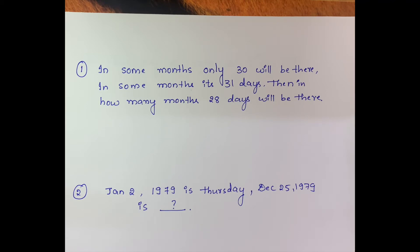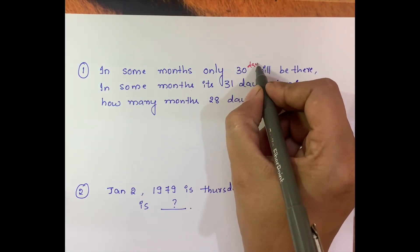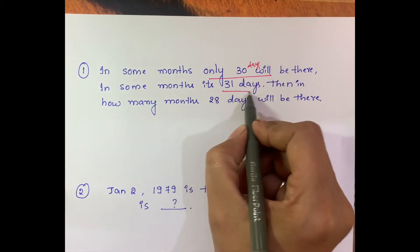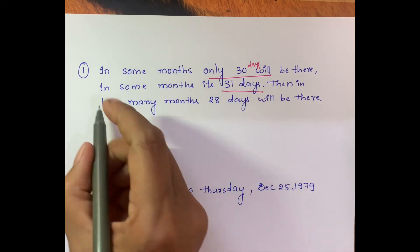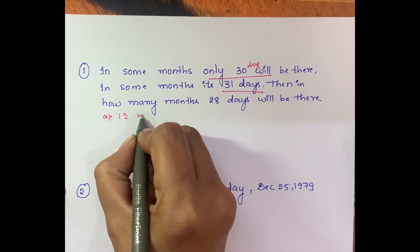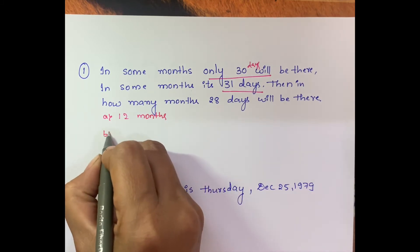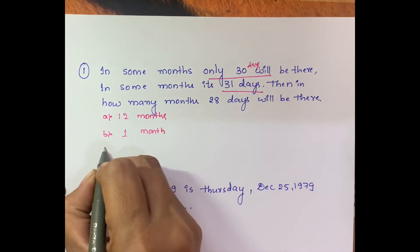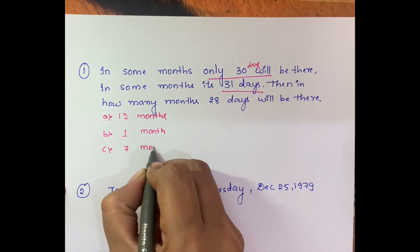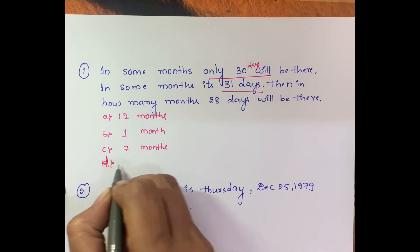Hello everyone. Here are the next set of questions, which are quite complicated compared to Part 1. We'll quickly move on. In some months only 30 days will be there, in some months 31 days. Then in how many months will 28 days be there? The options are: first, all 12 months; second, one month; third, only seven months; fourth, none of the above.